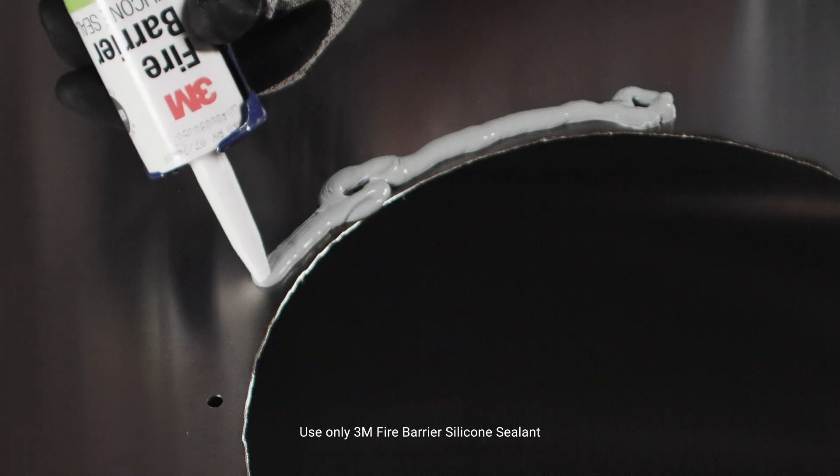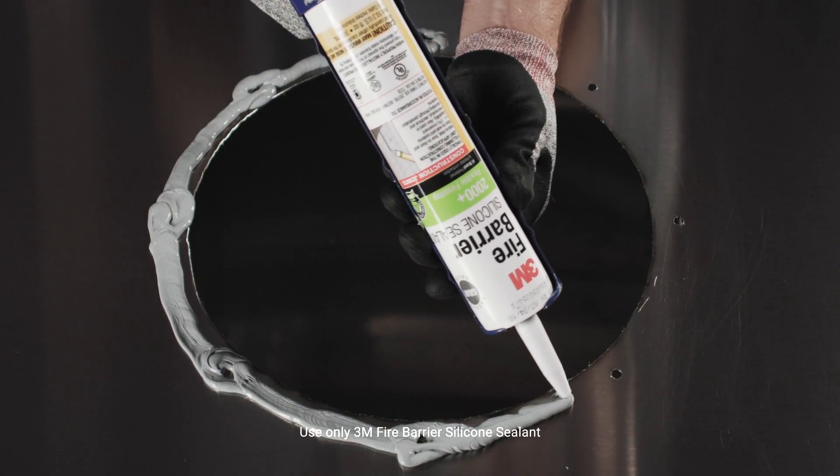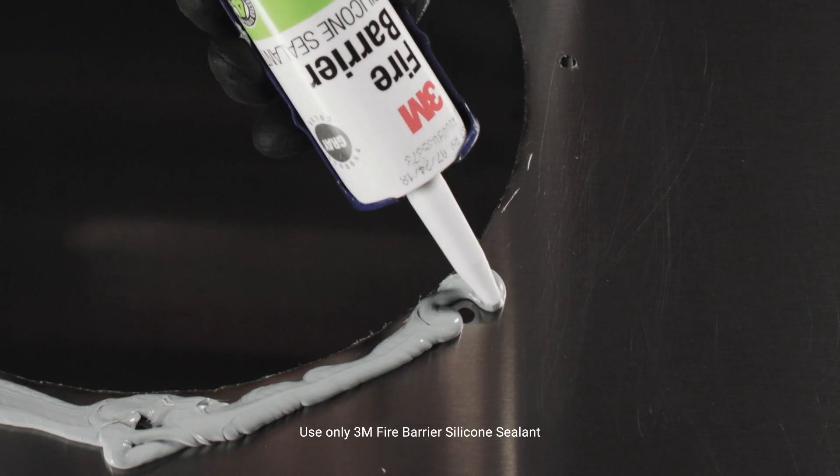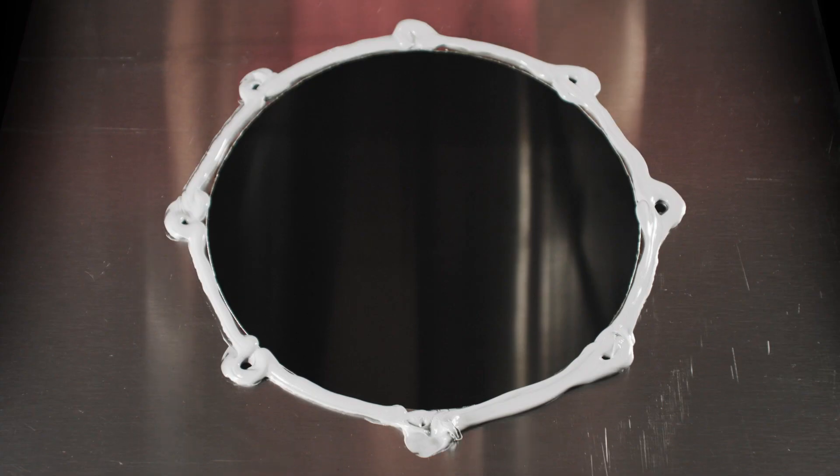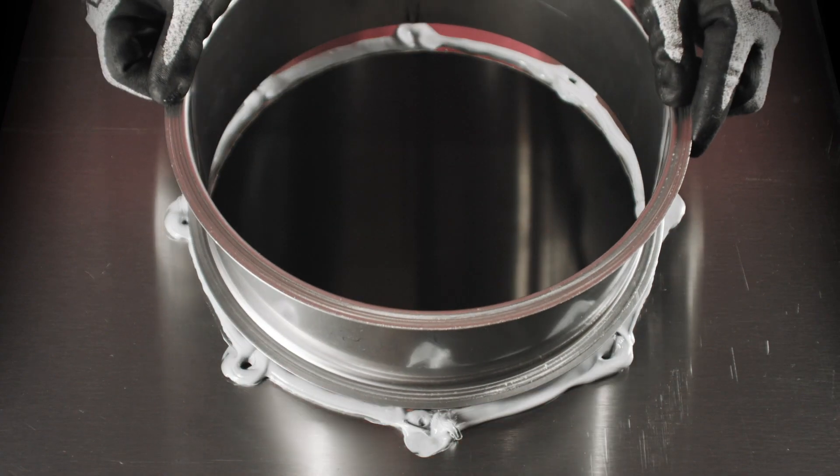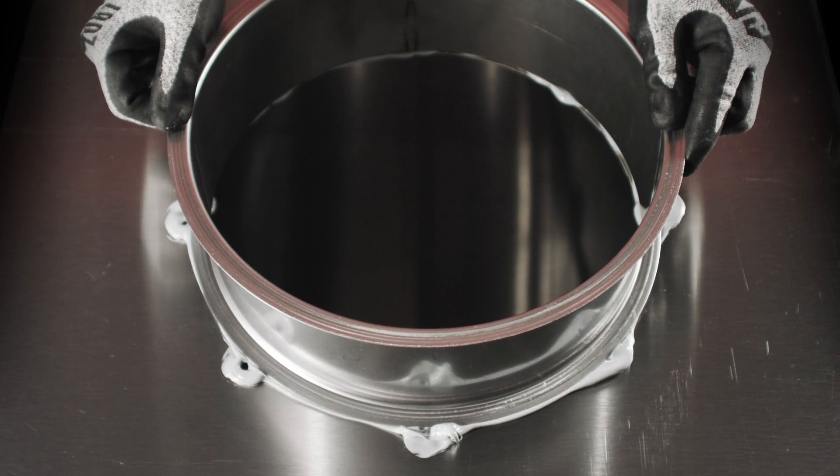Use a half-inch bead of silicone to seal above the cut hole, and use a generous amount around the bolt hole circles. Center the riser above the cut hole, and push the riser down into the silicone.